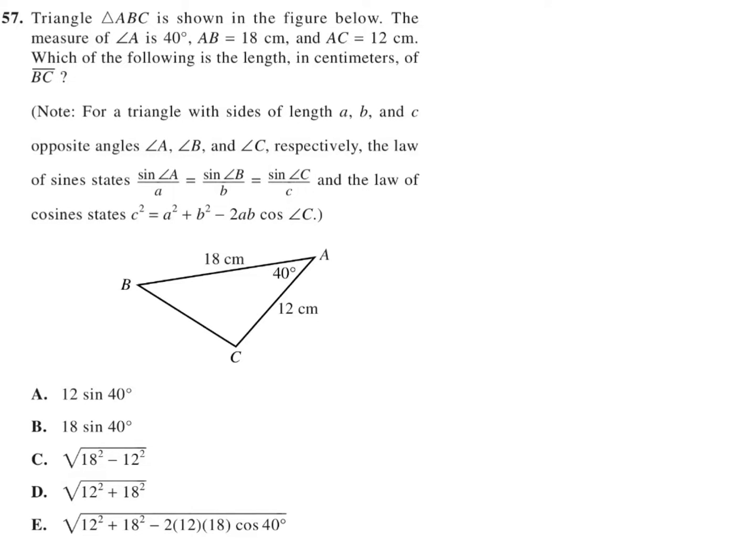Triangle ABC is shown in the figure below. The measure of angle A is 40 degrees, AB is 18 centimeters, and AC is 12 centimeters. Which of the following is the length in centimeters of side BC?